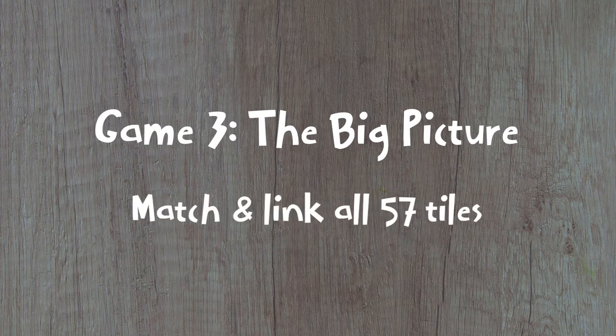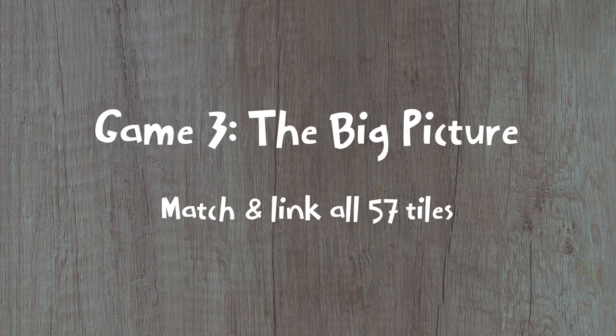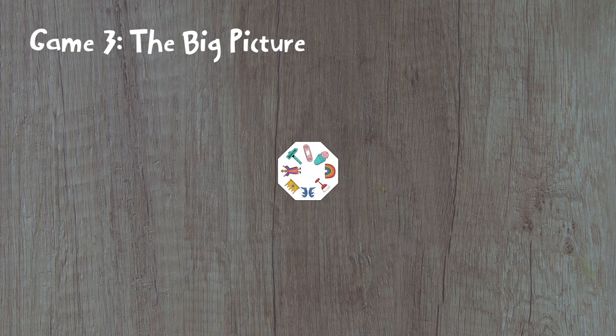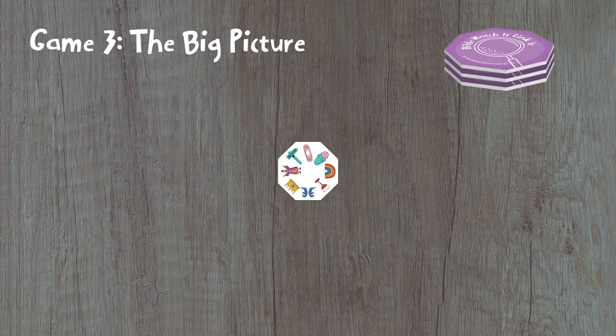The Big Picture is a cooperative game where all players work together to match and link all 57 tiles. This is also a great solo game to play by yourself. At the start of the game, place one tile face up at the center of the table. All remaining tiles are placed face down in several stacks.